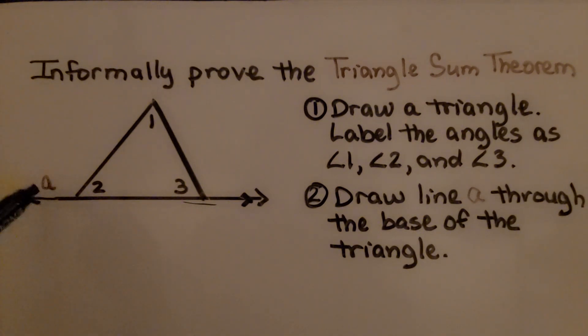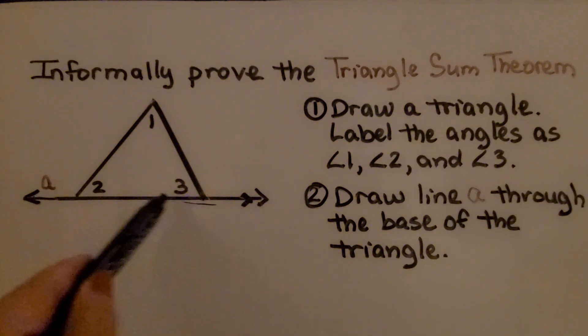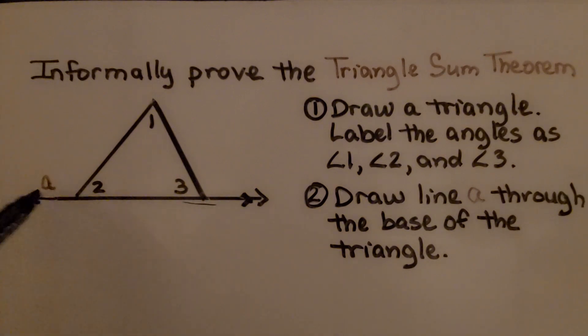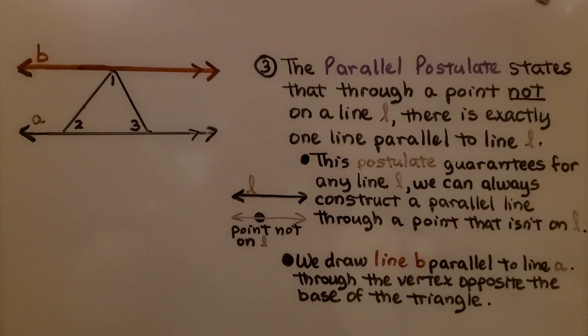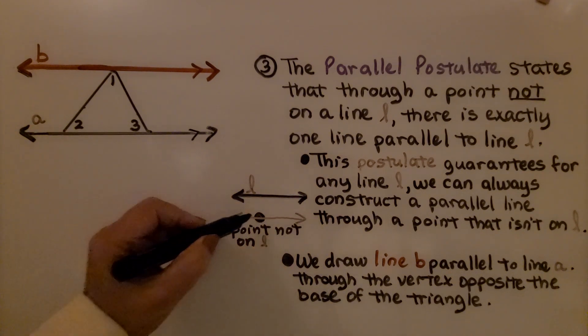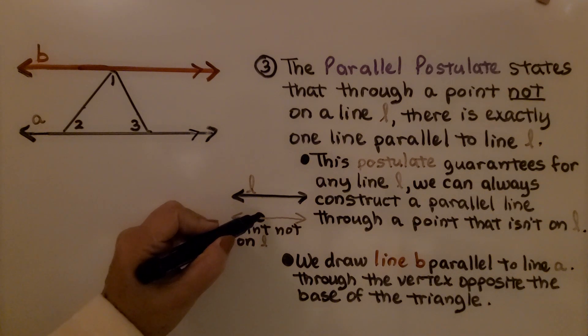Then we're going to draw line A through the base of the triangle. The parallel postulate states that through a point not on a line L, so here we have line L, and here we have a point that's not on line L, there is exactly one line parallel to L.